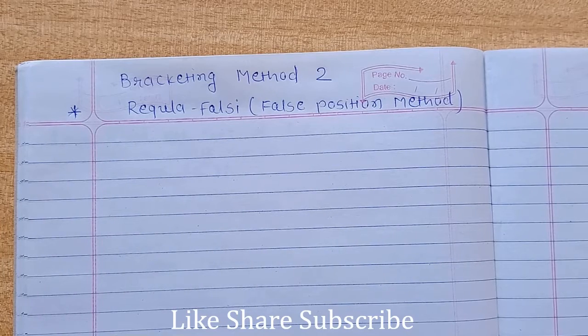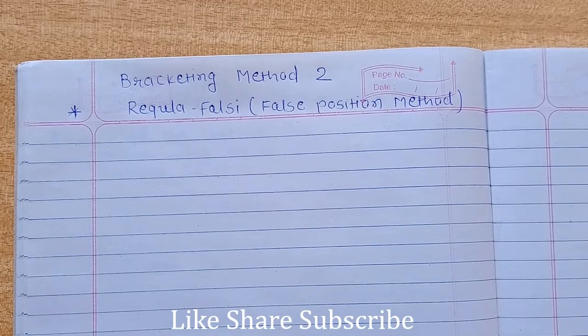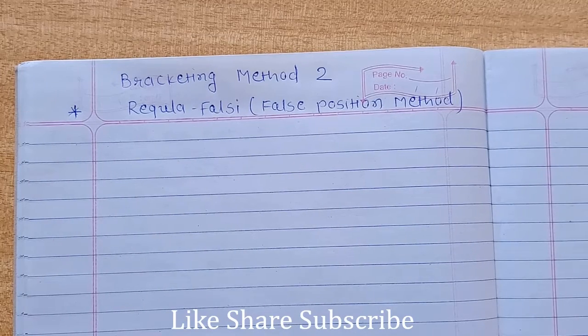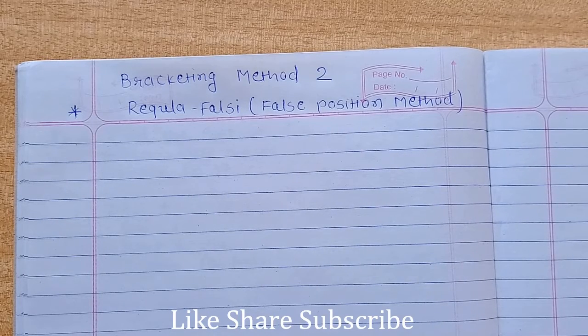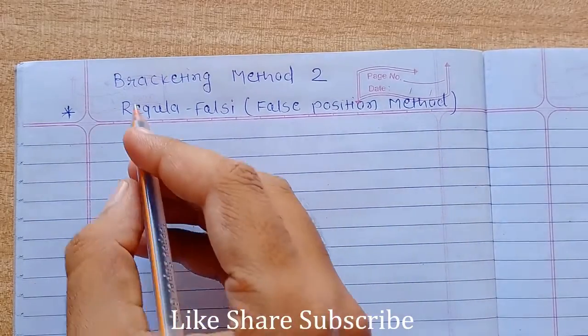Now what is bracketing method? We have already discussed that. In bracketing method, the root lies between the bracket, between the given bracket. So let's see how this method will work.